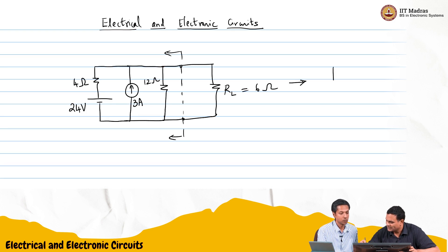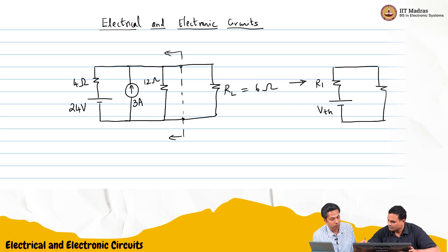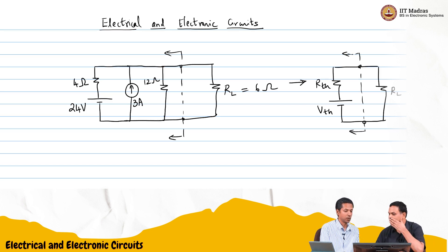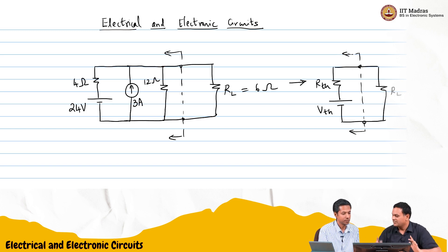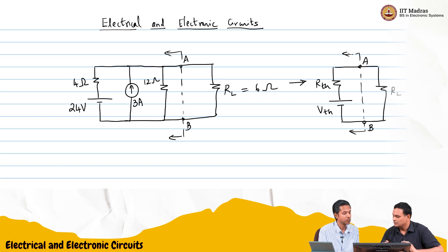We want the Thevenin equivalent — you want to bring it to something like a V Thevenin and R Thevenin with RL. So first, the open circuit voltage. We said that V Thevenin — let me mark these nodes as A and B. Across A and B we need to find the open circuit voltage. Let us do that.